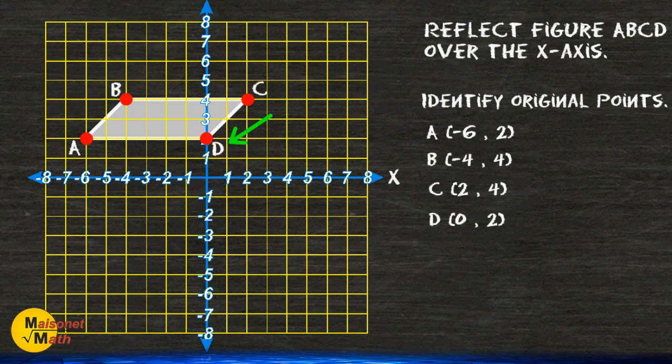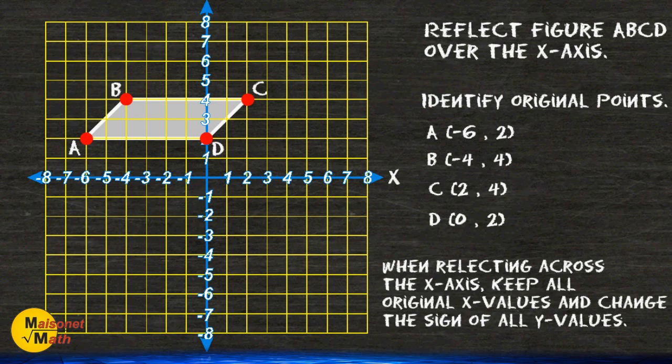Whenever you reflect any object over the x-axis you should just keep all of your x values and simply change the sign of all of your y values. So what we are going to do is take a look at all of the x values that we have recorded from the original points and we are going to rewrite those keeping the value exactly the same.